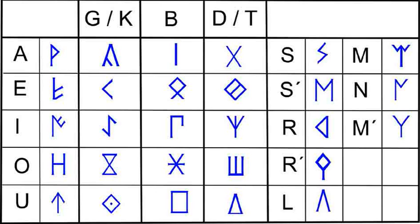The modern Bamum script is essentially CV-syllabic, but doesn't have enough glyphs for all the CV-syllables of the language. The rest are written by combining CV and V-glyphs, making these effectively alphabetic.